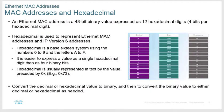MAC addresses are in hexadecimal format, and IPv6 — which we'll cover in chapter 7 or 8 — is also in hexadecimal, so you really need to understand it. The hexadecimal system is a base-16 system, meaning it's numbered 0 through 15, giving you 16 total numbers.